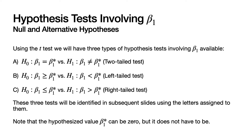Note that the hypothesized value beta_1 star can be zero, and oftentimes it will be, but it doesn't have to be. In some cases, all we want to do is check if there is a linear relationship between the response and the explanatory variable, and so the appropriate value for beta_1 star would be zero. On the other hand, it may be of interest to show that beta_1 is greater than or less than some non-zero value. This is a very flexible testing procedure because we can put any appropriate value for beta_1 star in these hypotheses.